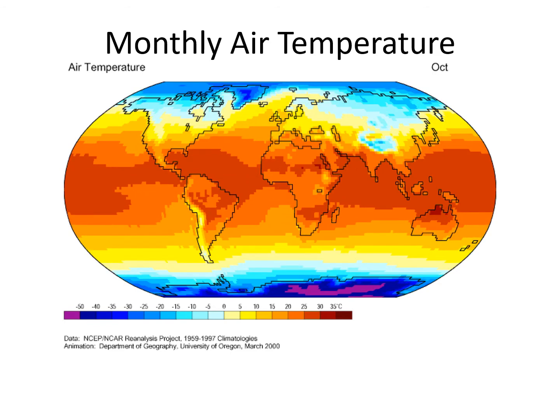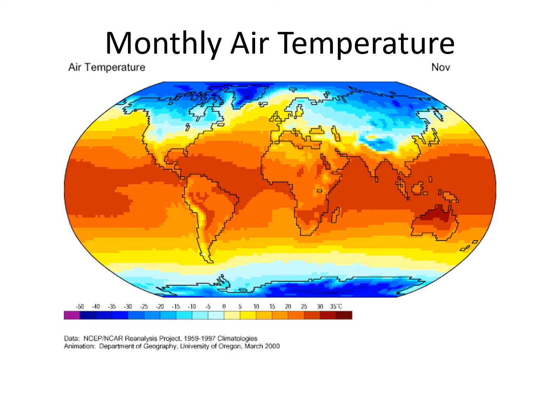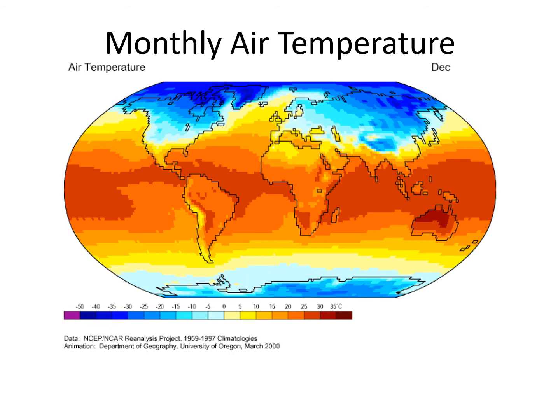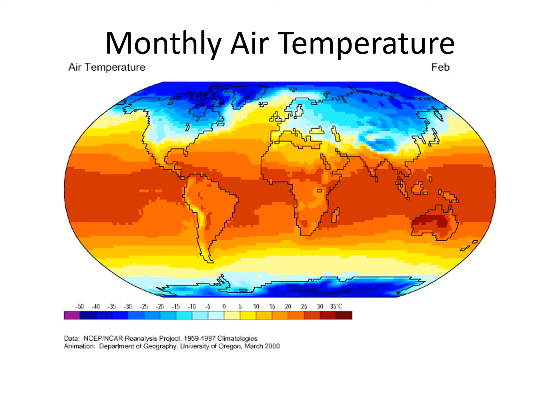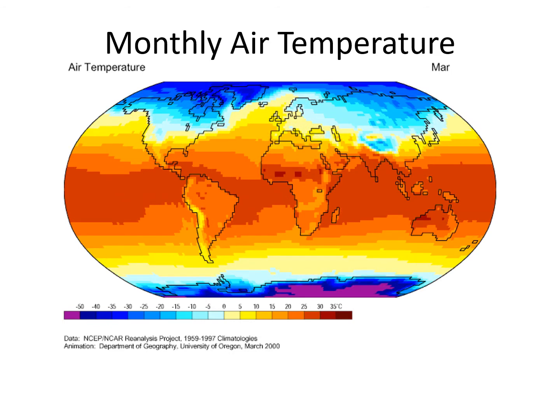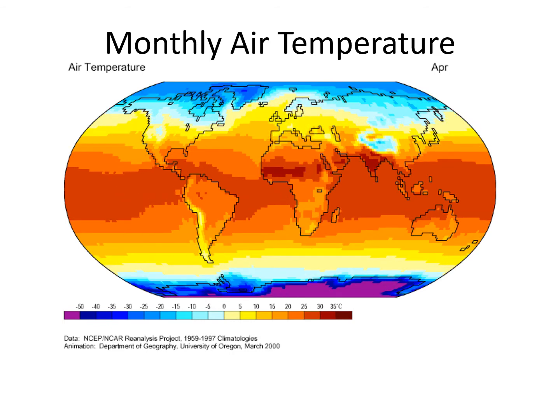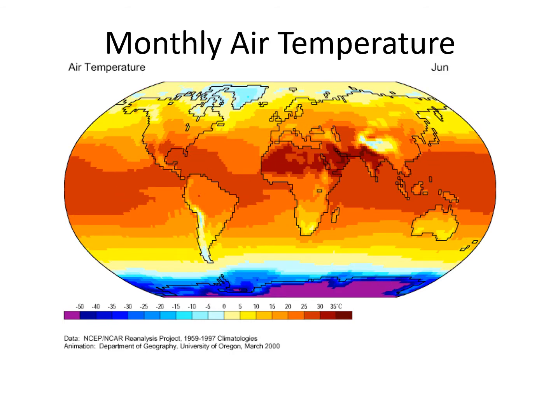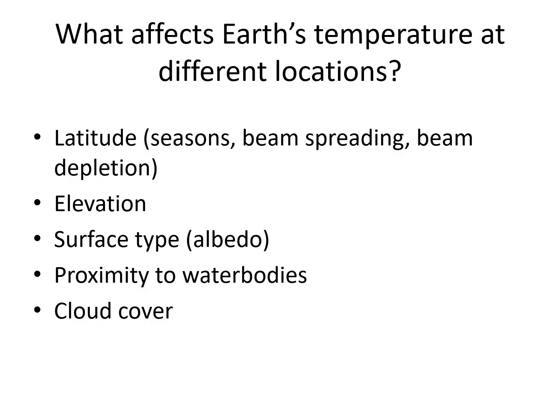In the next section, we will consider factors that cause spatial variations in temperature. In this section, we will consider five factors that cause spatial variation in temperature on Earth.